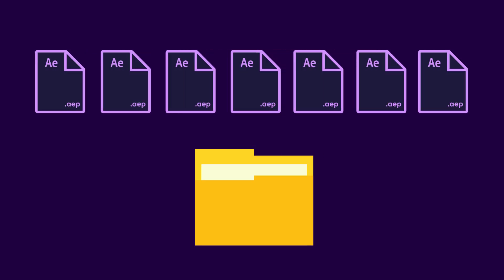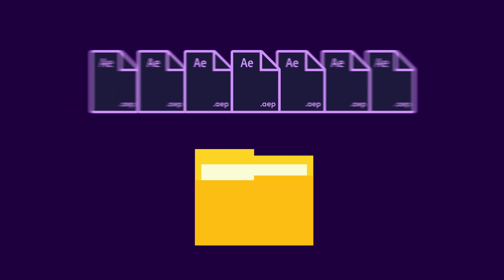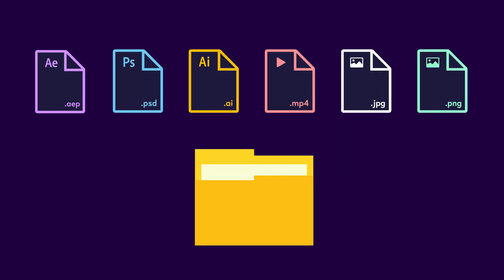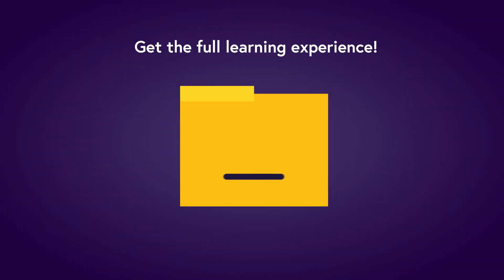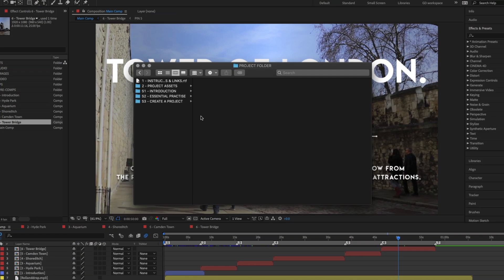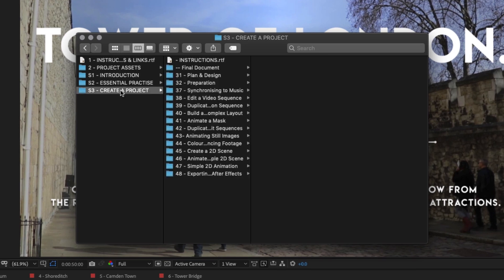The download folder comes with lots of exercise documents carefully developed to aid your learning experience. The folder also comes with document resources such as videos, graphics and images you can use to build your first video presentation from scratch later on in this course. To get the full learning experience I recommend you get the project folder — download link with instructions is in the description. With the project folder open, click into folder S3, create the project, then click into folder 44, color enhancing footage, and open the color enhancing document.